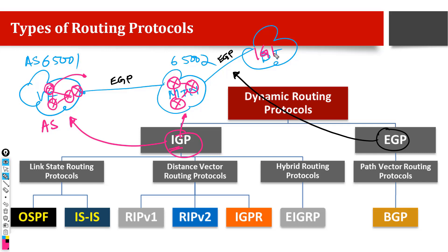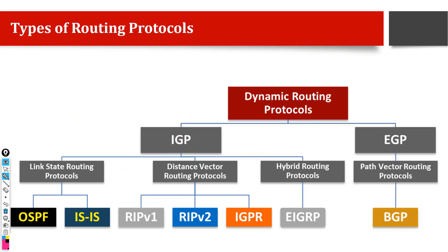Each autonomous system will have its own IGP running inside the network. Under EGP there is only one type of protocol which is famous today, and it is BGP — this is also used for the internet. So EGP is straightforward: only one type of routing protocol. Under IGP, we have two main categories.